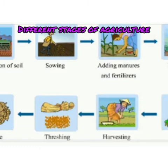Manure and fertilizers add nutrients to the soil. Plants absorb these nutrients from the soil through their roots. Next is irrigation. Plants need water for growth. Irrigation is the act of supplying a sufficient amount of water to plants in the field regularly.